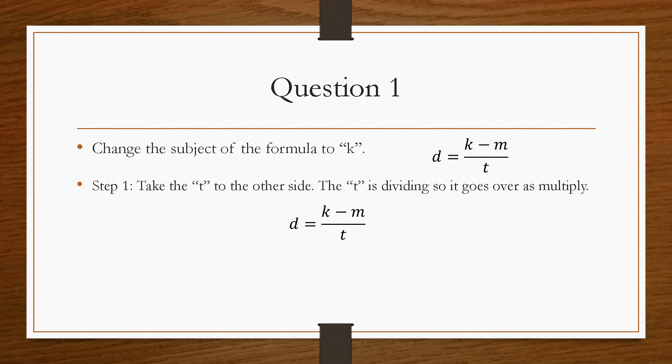Step one is we have to take the t, because we have to move the m and the t. It's easier to move the t first. The t in this case is dividing, so it would have to go over as times. So we take the t, bring it across, and it goes over as times. Your equation now becomes dt equals k minus m.